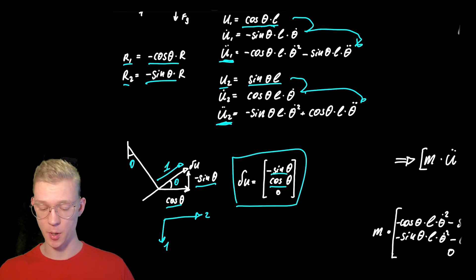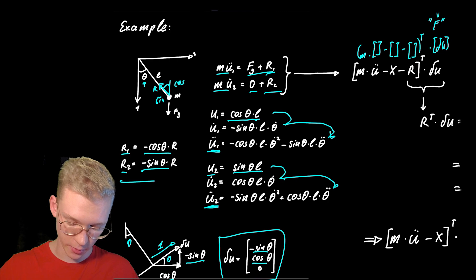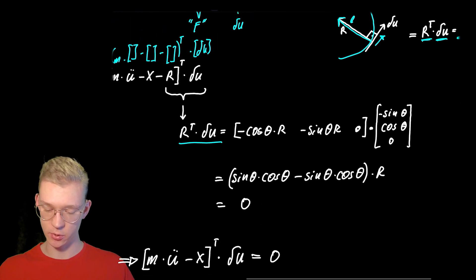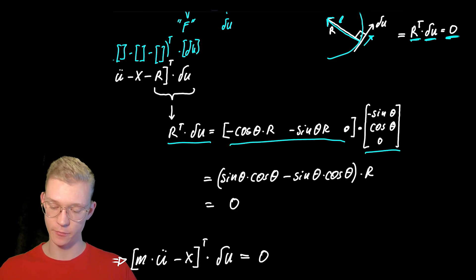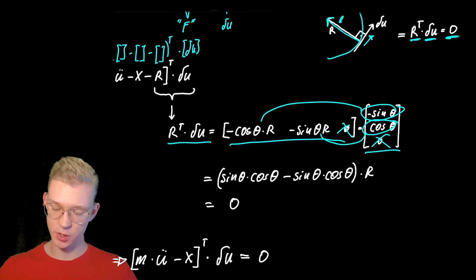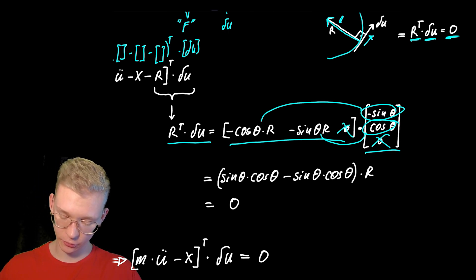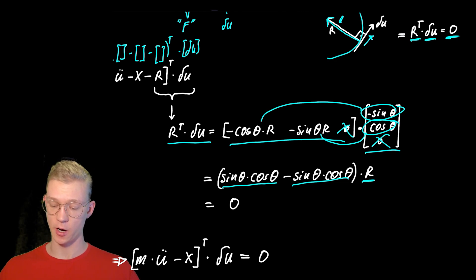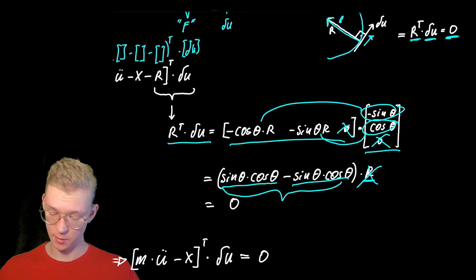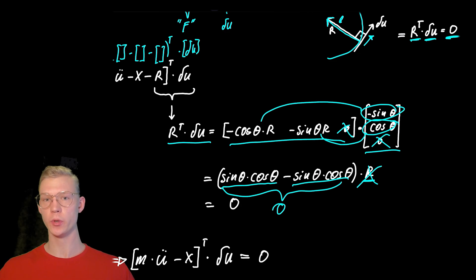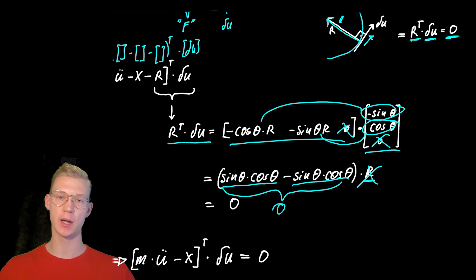Now that we know the virtual displacements and the reaction forces, we can verify that the reaction forces transposed times du actually equals zero. Taking the transposed reaction forces and the virtual displacement vector, multiplying term by term: we get sine theta times cosine theta minus sine theta times cosine theta, times R. The term in brackets is zero, so we confirm that the reaction forces are indeed orthogonal to our virtual displacements. This is why we can get rid of them when we project our forces into directions compatible with the constraints.